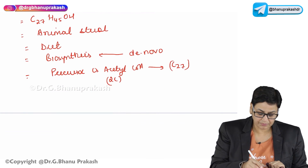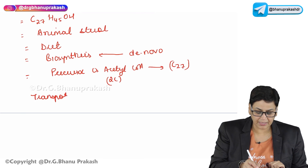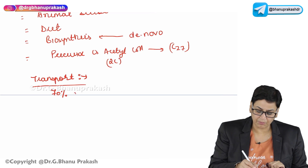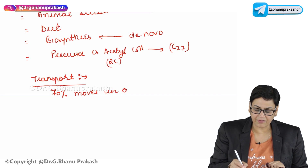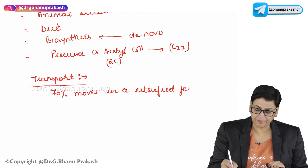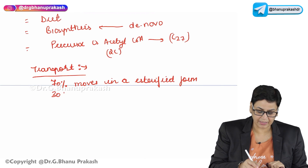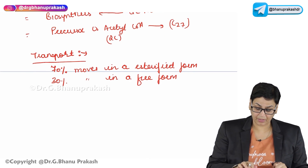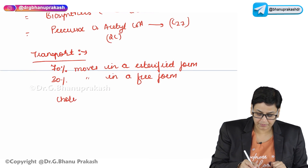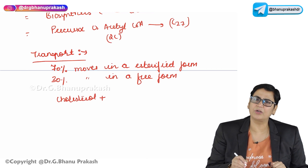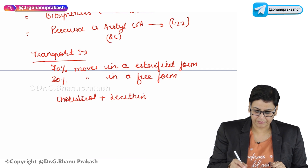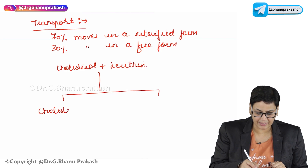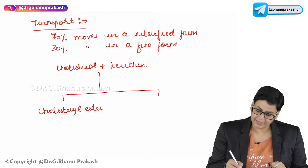Regarding the transport of cholesterol — being an animal sterol — 70% of cholesterol moves in an esterified form, meaning in the form of an ester, and 30% moves in a free form. This cholesterol combines with an important phospholipid known as lecithin to form its esterified transportable form, which is known as cholesterol ester and lysolecithin.